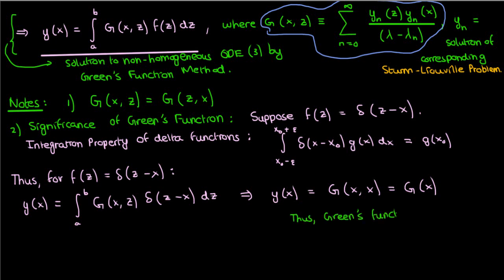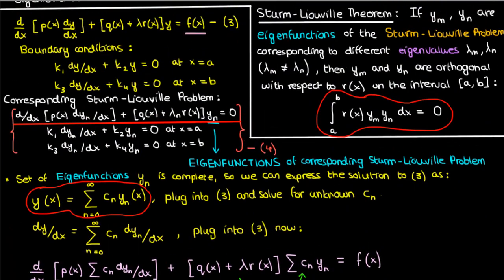What does this result even mean though? Well, it means that the Green's function is the solution to this non-homogeneous ODE if our f of x were a delta function.